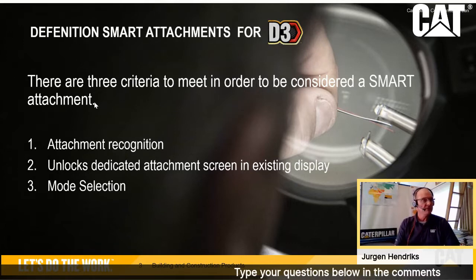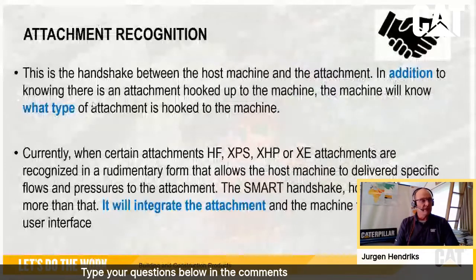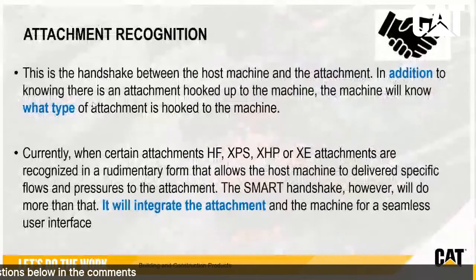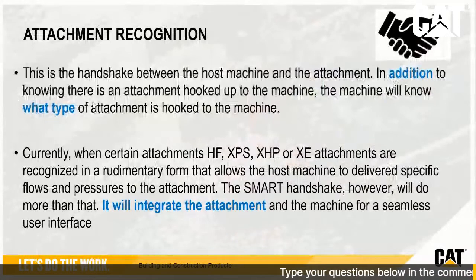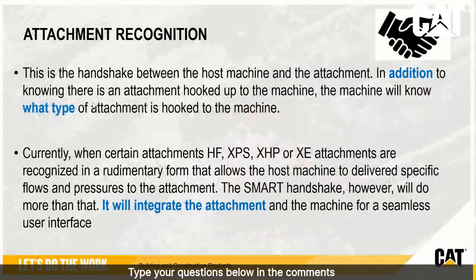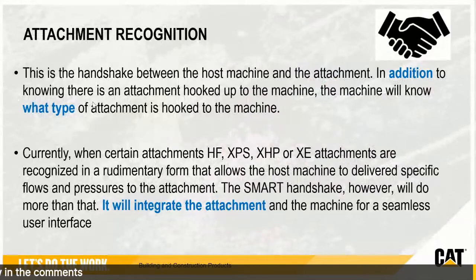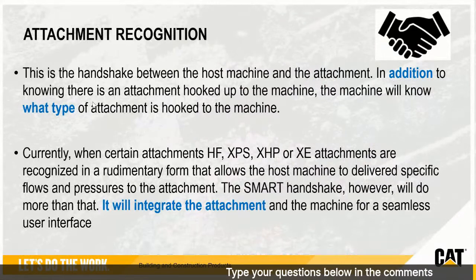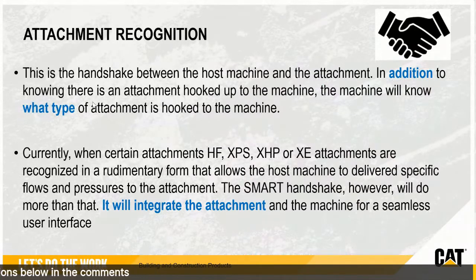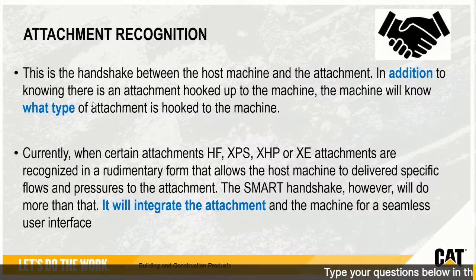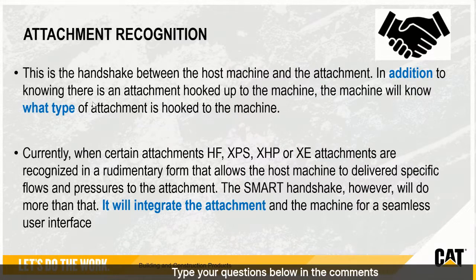Taking a deeper dive into attachment recognition: you can think of this as a handshake. The machine recognizes not only that a tool is attached, but also what type of tool — for example, a backhoe loader or a grader blade. In older machines we had different types of auxiliary hydraulics: high flow, high flow XPS, and XHP hydraulic, all depending on what oil pressure and oil flow you need for specific tools. The D3 will still offer these hydraulic types but will now integrate the attachment into the machine.